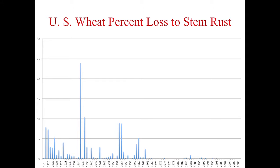UG99 has spread throughout Eastern Africa. This map shows that in 2005 race TTKSK was present along with a similar TTKSF race in South Africa. Over time, the race complex has spread throughout Eastern Africa and into the Middle East. Not only is it spreading geographically, but the virulence is spreading, with a diversity of races in the complex knocking out additional resistance genes. The most recent published map shows UG99 found throughout all of East Africa.